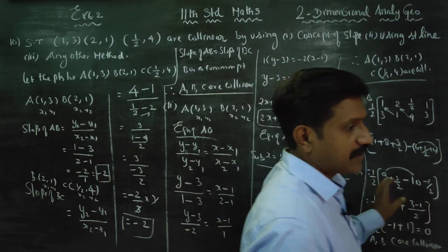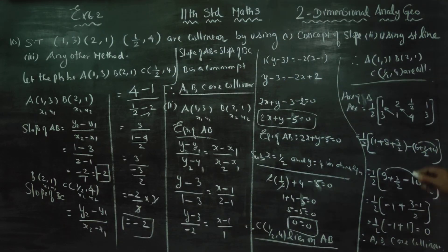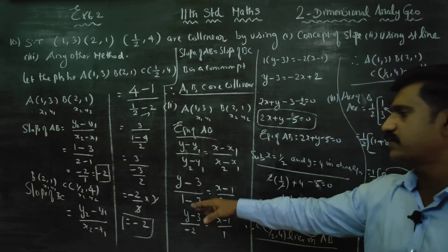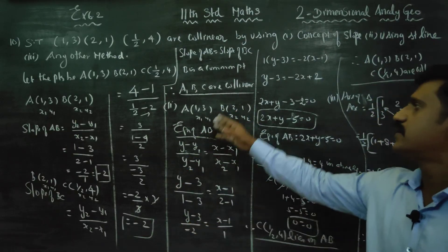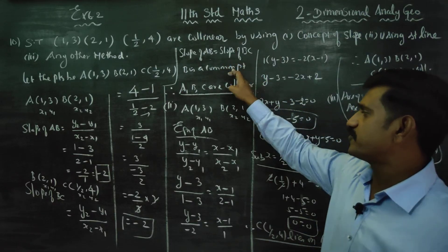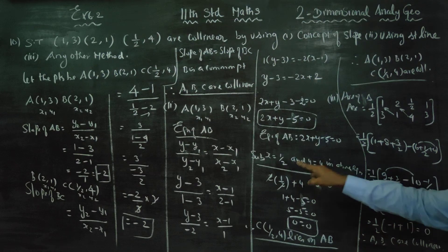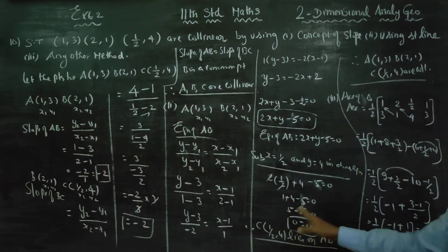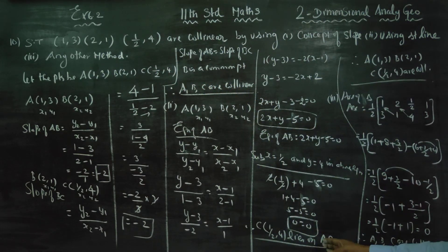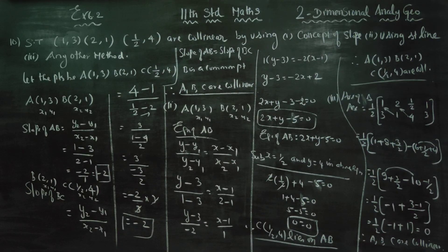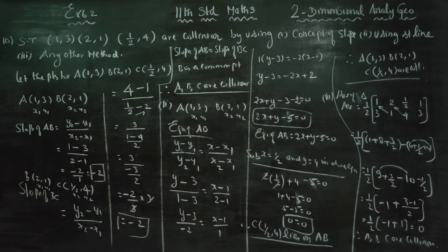This is using the concept of area of triangle, which is my third method. To summarize: using the concept of slope, slope of AB and slope of BC both equal minus 2, so slope AB equals slope BC. Using the equation of a straight line, substituting the third point satisfies the equation, so C lies on AB, therefore collinear. Using area of triangle, the answer is 0, so the given three points are collinear. We have used three different methods. Thank you.